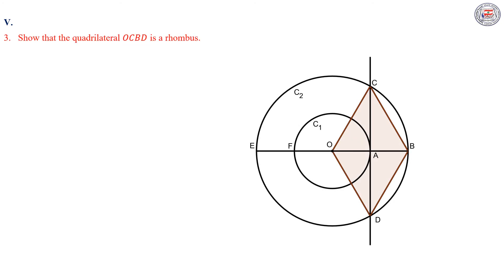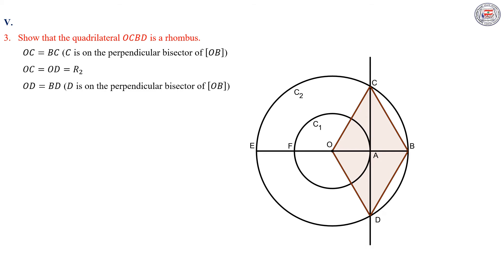Now let's get back to part 3. Show that the quadrilateral OCBD is a rhombus. We have OC equal BC since C is on the perpendicular bisector of OB. And we have OC equal OD equal R2. And OD equal BD since D is on the perpendicular bisector of OB. Then we can deduce that OC equals BC equals OD equals BD. Therefore, OCBD is a rhombus since it has four equal sides.